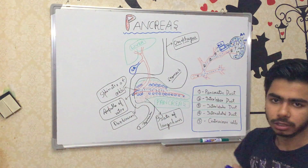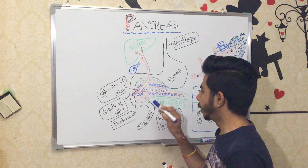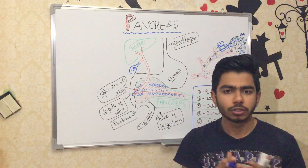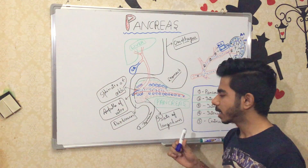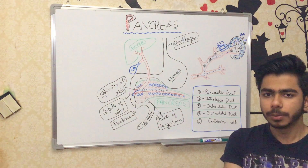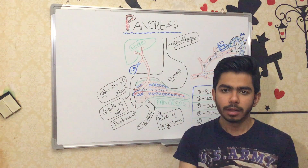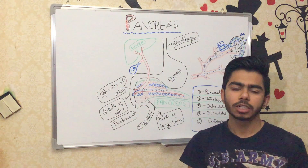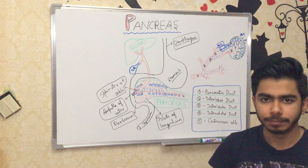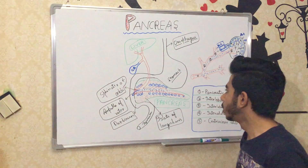This was about the exocrine functions. The endocrine functions are provided by the islets of Langerhans: alpha cells produce glucagon, beta cells produce insulin, and delta cells produce somatostatin, all released into the blood according to the needs of the body.